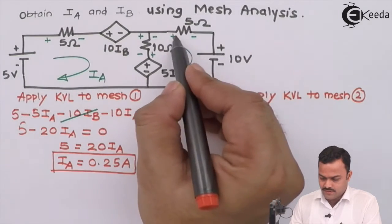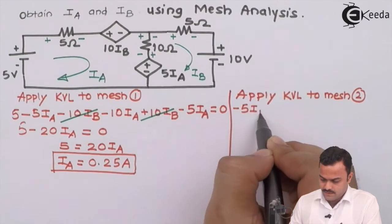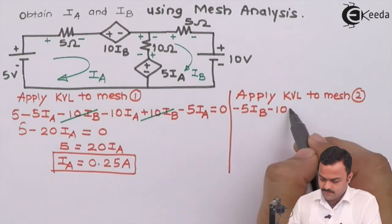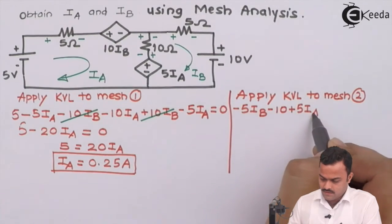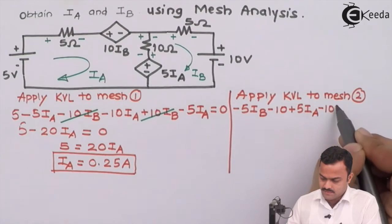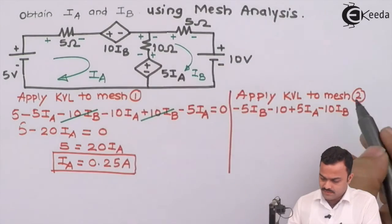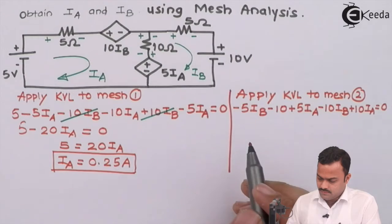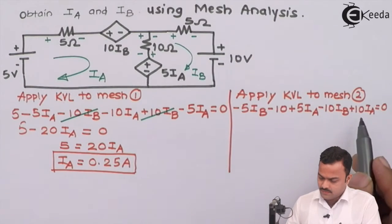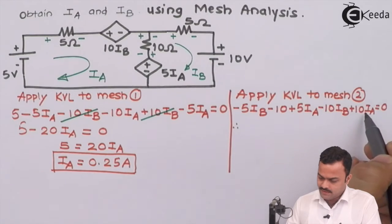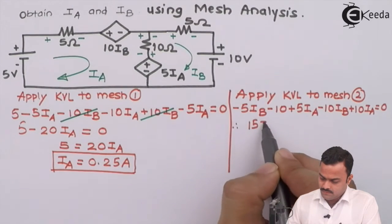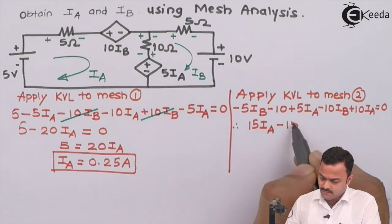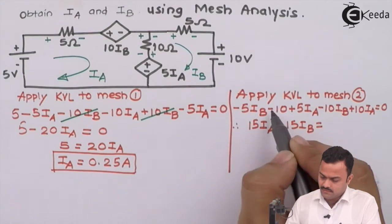Starting from Mesh 2: minus 5·Ib, then minus 10, then plus 5·Ia, then minus 10·Ib, then plus 10·Ia equal to zero. Simplifying: 5·Ia + 10·Ia = 15·Ia, and minus 5·Ib minus 10·Ib = minus 15·Ib.